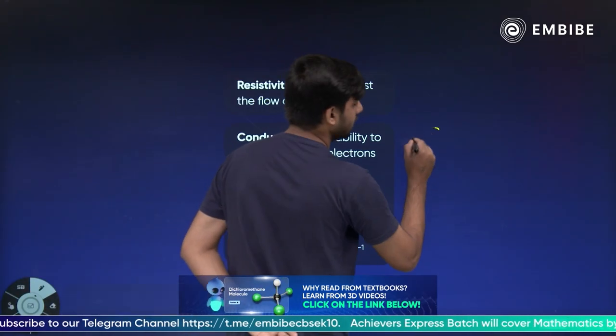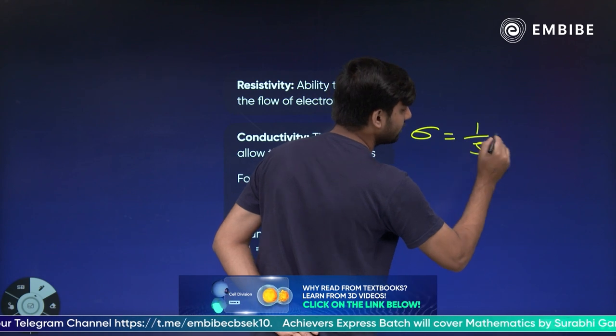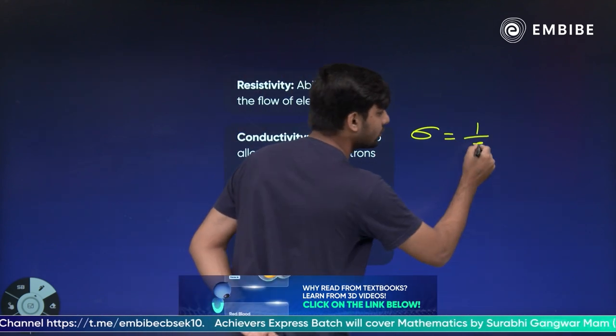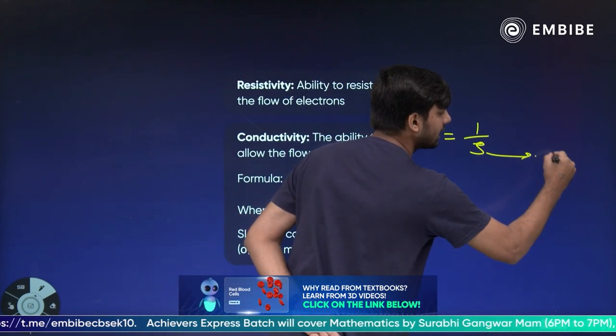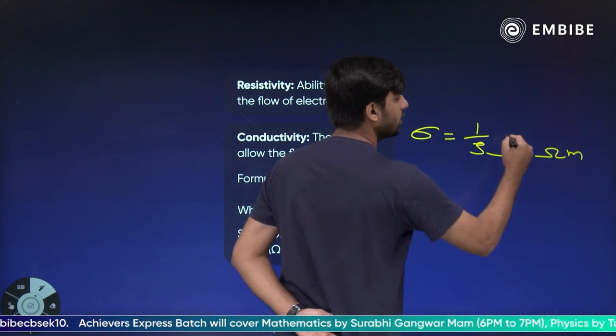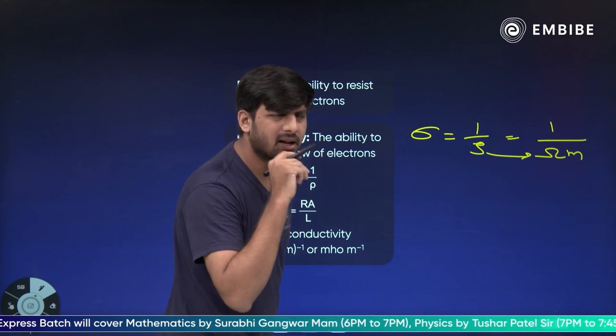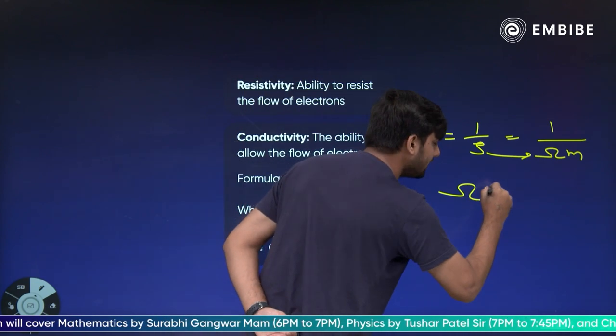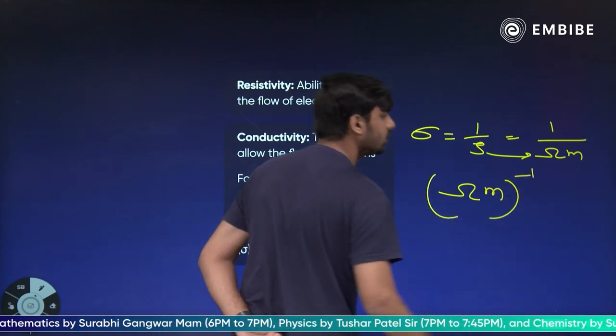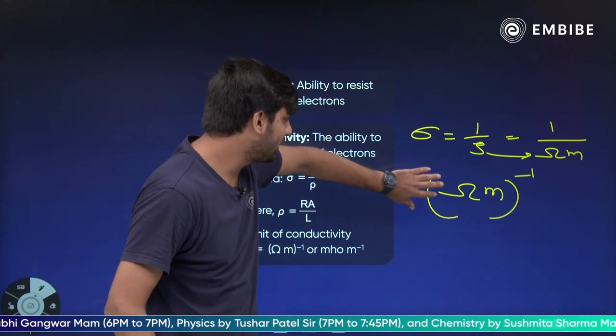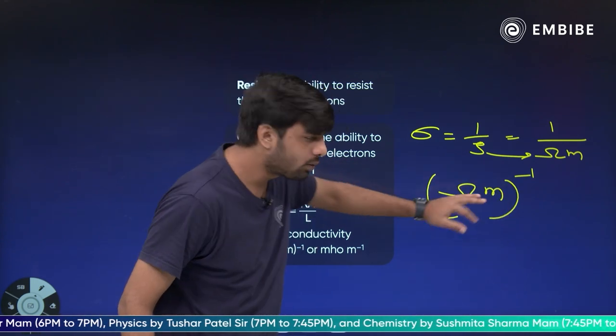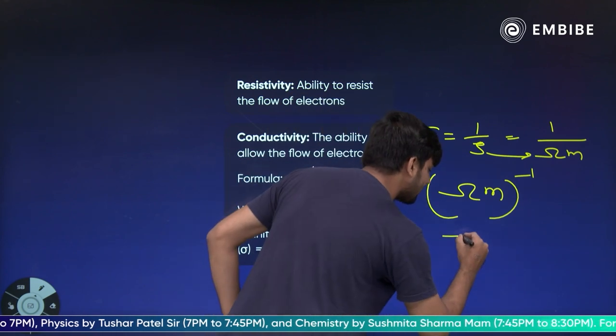Now conductivity is 1 upon resistivity. To us unit simply derive. Resistivity unit, what was? Ohm meter. To ye ho gya one upon ohm meter. One upon ohm meter. Ohm meter inverse. Inverse, scientist creative. Ohm ka ulta kar do.